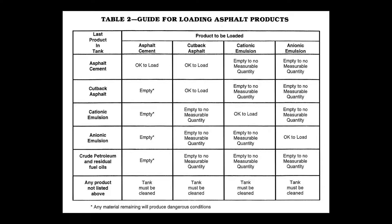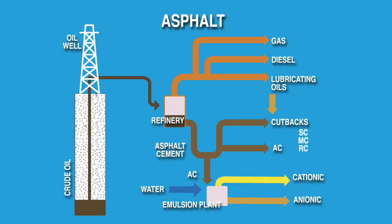He must know whether it is an AC product, a cutback product, or an emulsion, its characteristics, and its maximum recommended temperature. Let's take a moment to briefly explain the makeup of these types of materials. In a very simplistic model, all asphalt products are derived from crude oil.